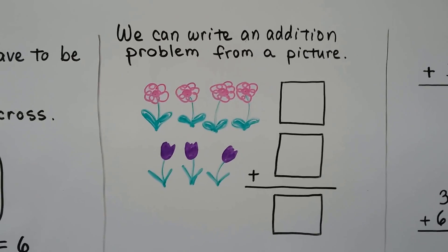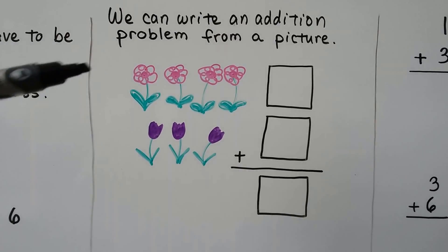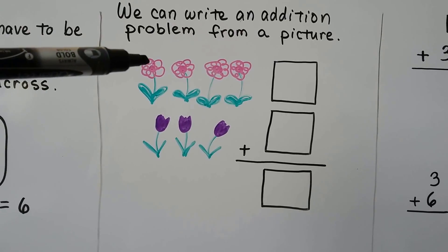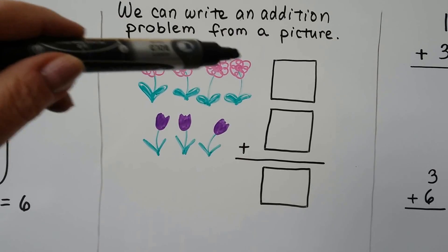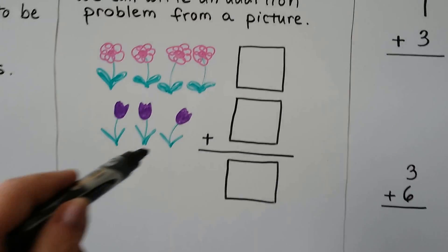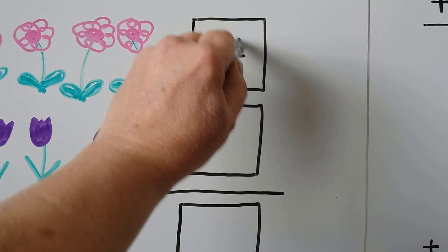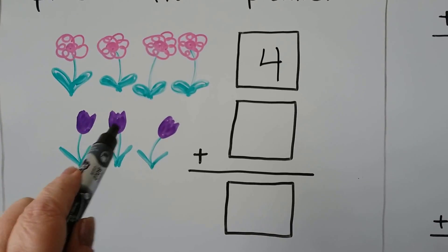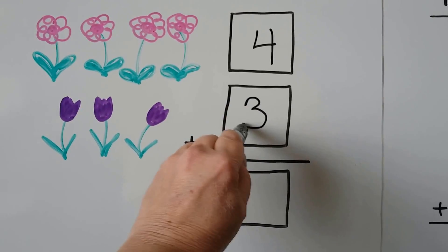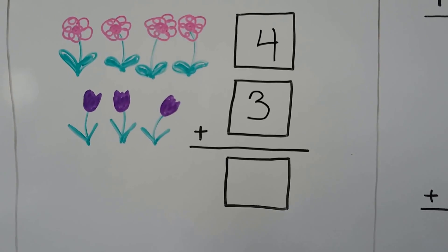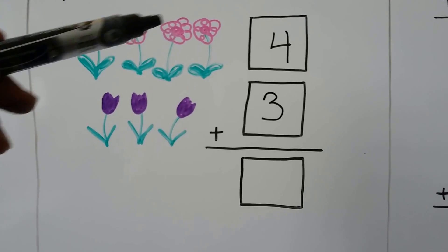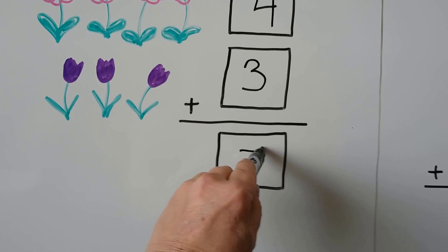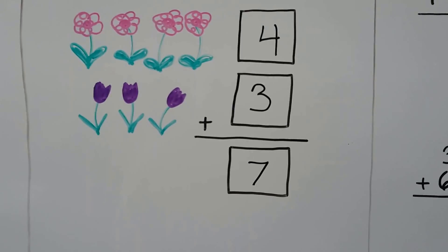We can write an addition problem from a picture. Here we have pink flowers and purple flowers. How many flowers are here? One, two, three, four. So we can write a four in this box. And how many flowers are here? One, two, three. We can count them and add them all together — one, two, three, four, five, six, seven. Four plus three is equal to seven.